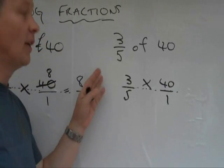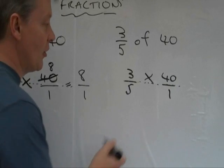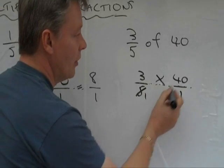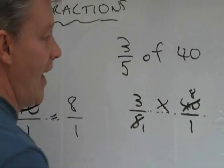And then what I can do is imagine that that line continues all the way across there. So whatever I do to the top, I can do to the bottom. So, again, I'm going to get rid of this 5 and that 40 by saying, that becomes 1, and that becomes 8.